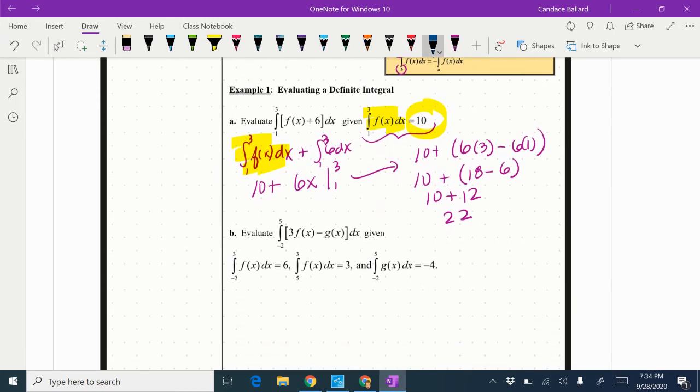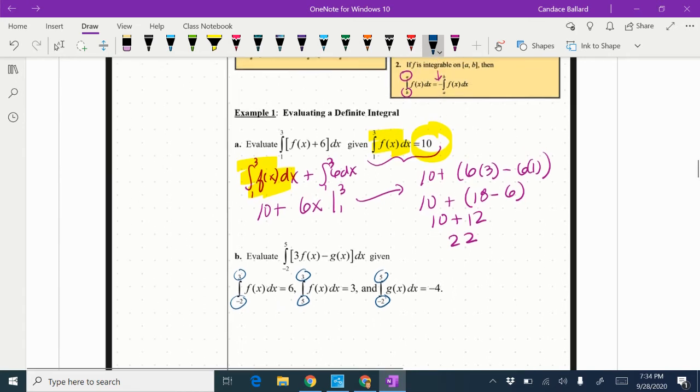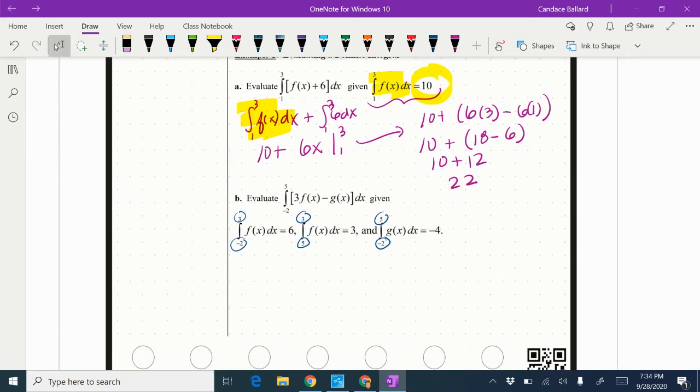All right on the next piece I have from negative two to five of three f(x) minus g(x)dx. I've got some interesting things. Notice I know something about from negative two to three and then I know something about five to three. I know something about negative two to five but that's for the g(x). I don't like the order that that's in so I am going to choose to flip it and make it negative.